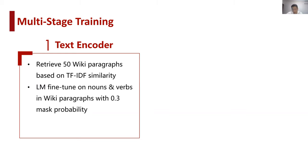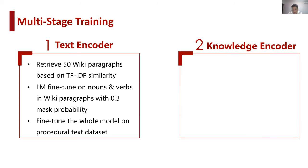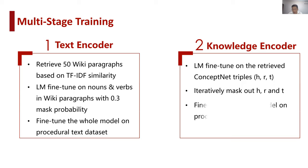In KOALA, embeddings of entities, verbs, and location candidates are used for downstream predictions. These words are mainly nouns and verbs. So the language modeling fine-tuning is only applied on nouns and verbs on wiki paragraphs, with each token having a 0.3 probability of being masked. Finally, the encoder is further fine-tuned on the target dataset with the whole model. We also use a similar multi-stage training procedure on the knowledge encoder. We add a language modeling fine-tuning on the ConceptNet triples. To feed the structural feature of a triple, we iteratively mask out its head concept, relation, and tail concept. Then we ask the encoder to predict the masked tokens using the other two unmasked components. In order to ensure trainability, if the head concept or tail concept consists of more than one token, we mask 50% of the tokens at each time.